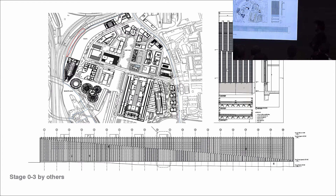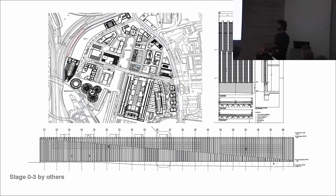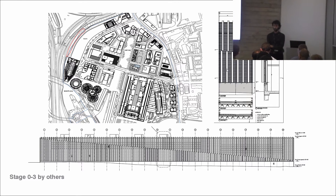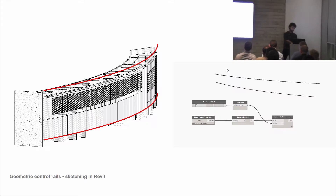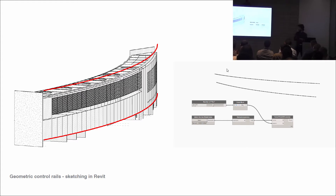Our first look at the job was to understand whether we could A, do this in Revit on its own, or B, go to a more parametrically enabled design solution to get what we needed out. We sat with the project team to understand what they're good at. They're fantastic at modelling in Revit, they understand lines in Revit, so that's how we sketch a picture.